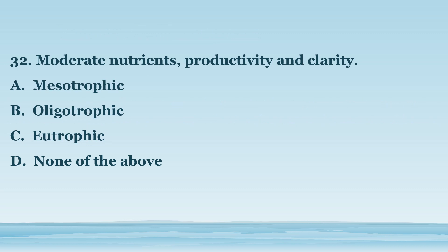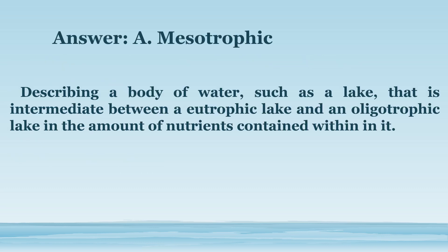Number 32. Moderate nutrients, productivity, and clarity. A. Mesotrophic. B. Oligotrophic. C. Eutrophic. D. None of the above. The answer is letter A. Mesotrophic. Describing a body of water, such as a lake, that is intermediate between a eutrophic lake and an oligotrophic lake in the amount of nutrients contained within it.